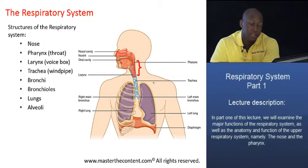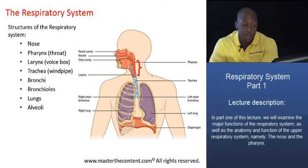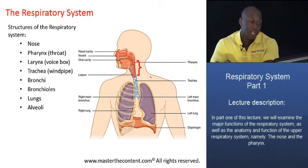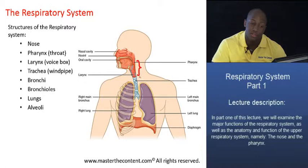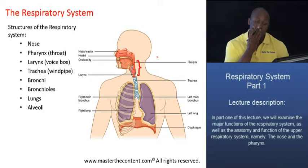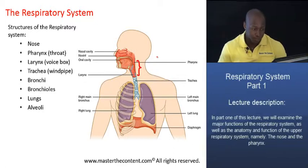Now, the larynx, also called the voice box, is a short cartilaginous chamber which actually connects the pharynx to the trachea. The larynx is primarily responsible for our voice because it contains the vocal cords.